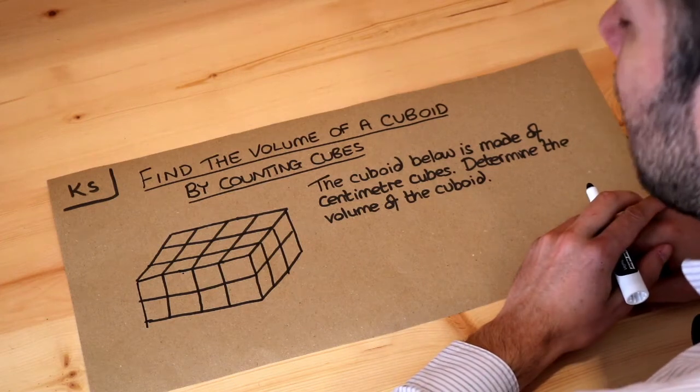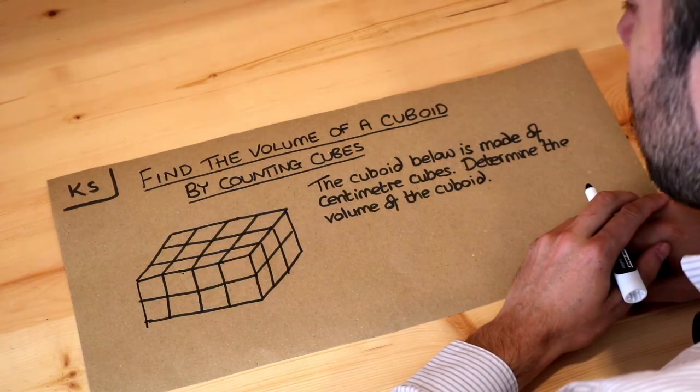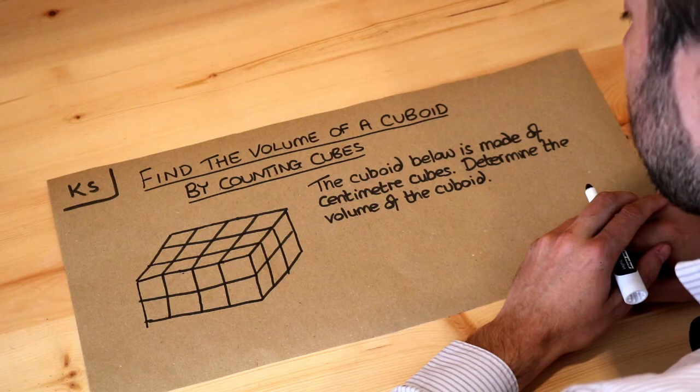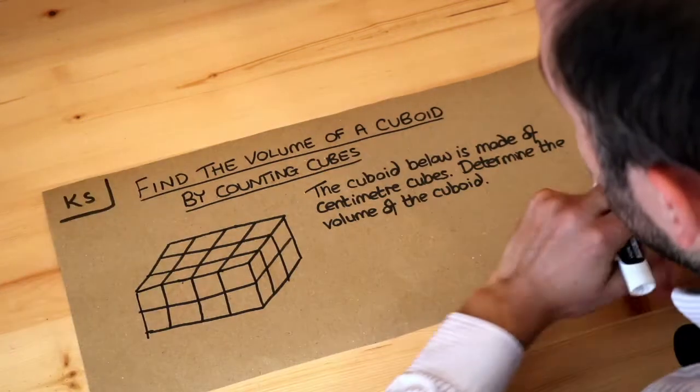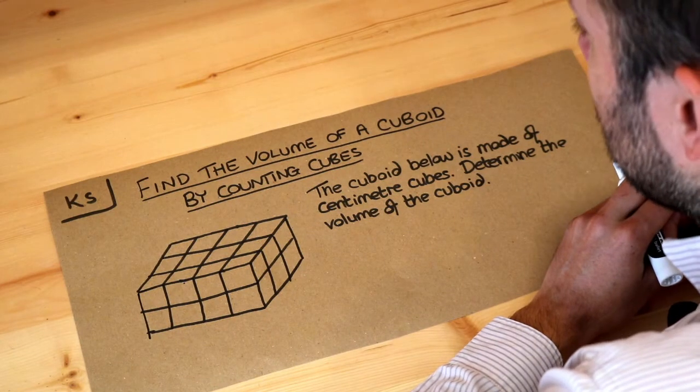Hello and welcome to Dr. Ross Mass's key skill video on finding the volume of a cuboid by counting cubes. Volume means the amount of space something takes up in three dimensions.